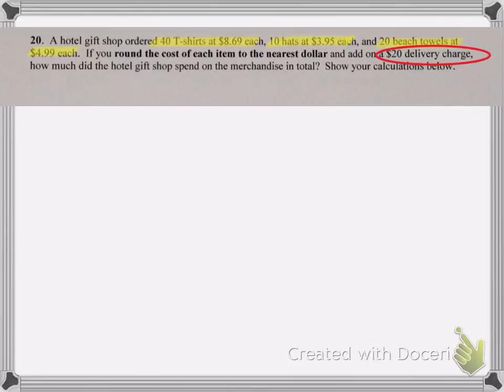For instance, 40 t-shirts at $8.69 means 40 copies of $8.69. But the $20 delivery charge only occurs once, so we don't have to multiply that by anything. We're supposed to round the cost of each item to the nearest dollar, so let's do the rounding first.